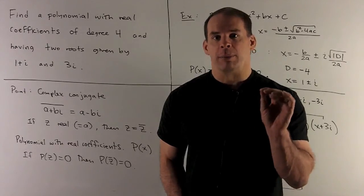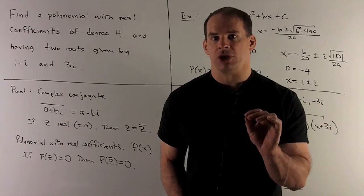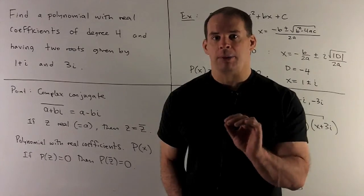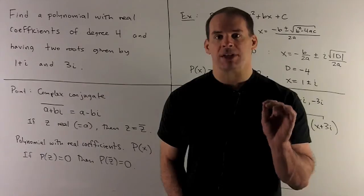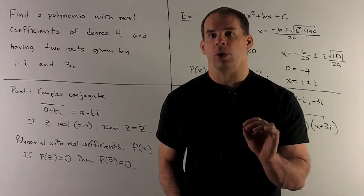Next, if I have a polynomial with real coefficients, if I have a complex root, say a plus bi, then its complex conjugate is also going to be a root of the polynomial.